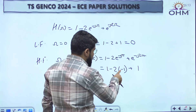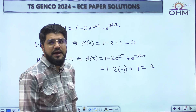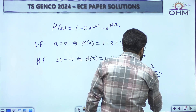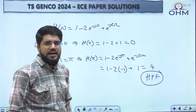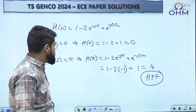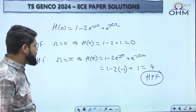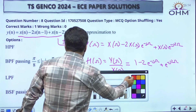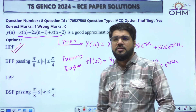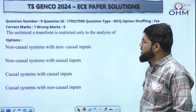At the high frequency omega equal to pi: 1 minus 2e^(-jπ) plus e^(-j2π). Since e^(-jπ) equals -1 and e^(-j2π) equals +1, the gain is 1 minus 2(-1) plus 1 equals 1 plus 2 plus 1 equals 4. The gain is high at the highest frequency and zero at the lowest, so it is a high-pass filter. Option number A is correct.